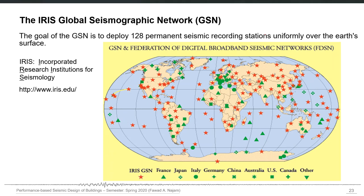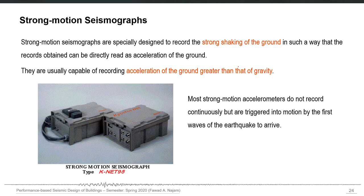Different international organizations have their seismographic networks. For example, the Global Seismographic Network (GSN) by IRIS — Incorporated Research Institutions for Seismology — is a consortium of different organizations for seismology research. They have a network of seismic stations installed all around the globe, almost uniformly distributed, so that any seismic activity in the earth's crust can be recorded and analyzed.